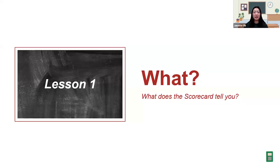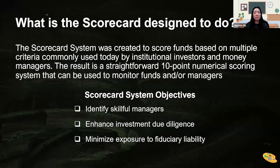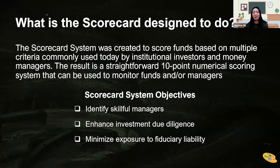The first thing I want to spend some time going over is what the scorecard tells you. The RPAG scorecard system was designed to score funds based on a multitude of criteria, resulting in a straightforward 10-point numerical scoring system that could be used to monitor funds as well as managers. The scorecard has three main objectives, the first being that it helps us identify skillful managers. When we're looking to add a fund into our plan lineup, a really big part of the process is finding managers who can consistently generate outperformance, especially for those actively managed strategies.